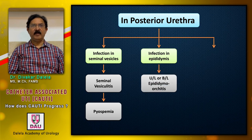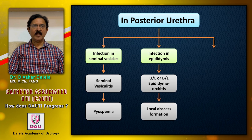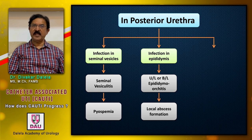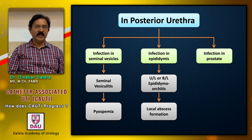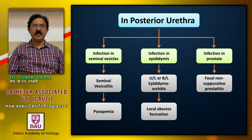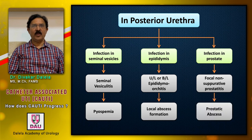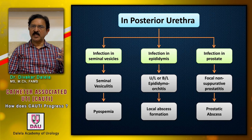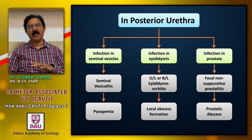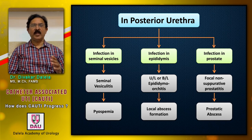The patient will develop epididymal orchitis. In some patients this epididymal orchitis can go to a suppurative stage where pus forms and the entire structure gets destroyed. In another patient, infection can spread into the prostate — what is known as focal non-suppurative prostatitis. Initially a patch of the prostate gland is involved, and later on an abscess in the prostate can form. Depending on the patient's immune status and factors related to the catheter, medication, and disease, infection can involve one, two, or all three of these glands.